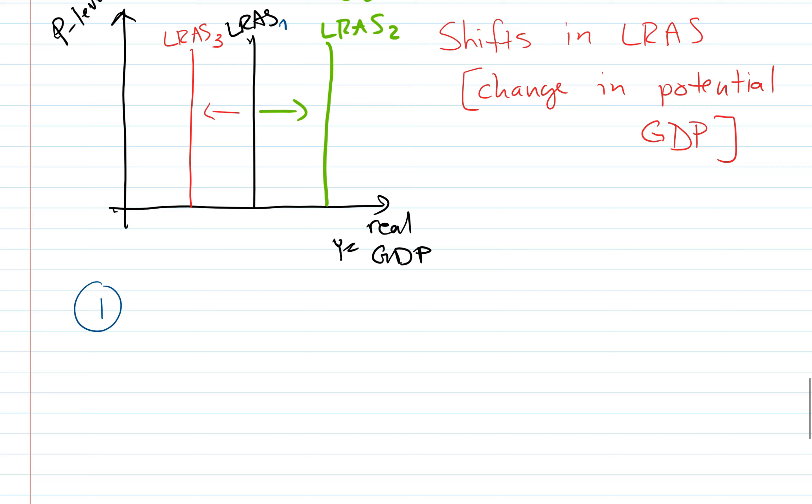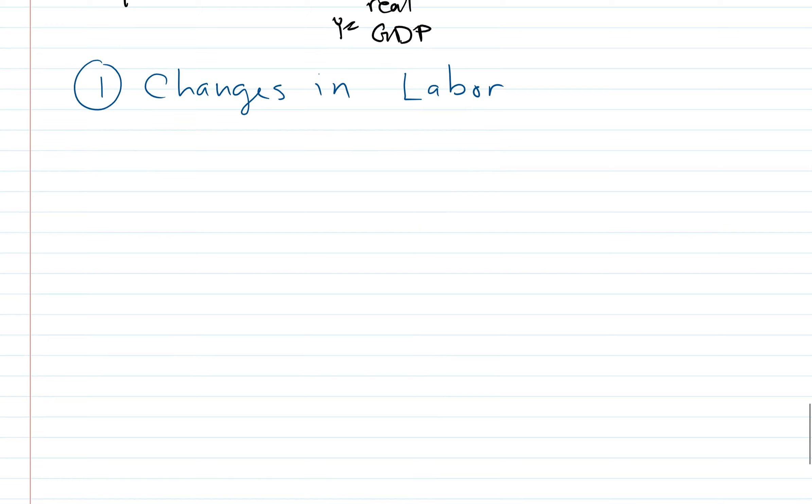The first thing could be categorized as changes in labor, something that affects L. Let's give some examples. Immigration. So if you have an increase in immigration, then we would expect this to increase our potential GDP. Because you can think of it remembering back to the PPF, now we have more labor, so our productive ability is higher. Here we're representing that productive ability as just this vertical line moving to a higher level of production.